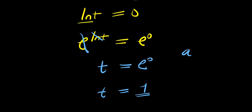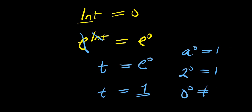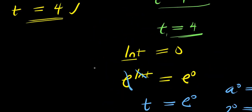For example, a to the power of 0 is 1, and 2 to the power of 0 is 1. The exception to this rule is 0 to the power of 0, which is not 1 — it is actually indeterminate.